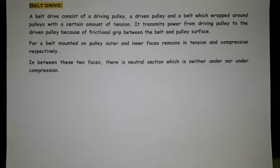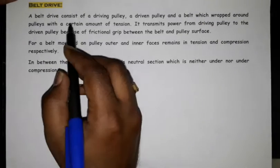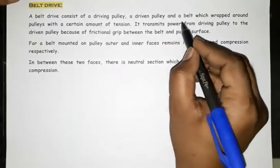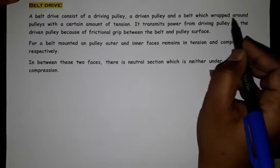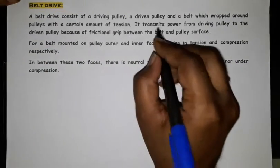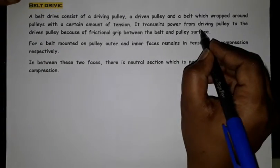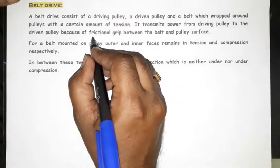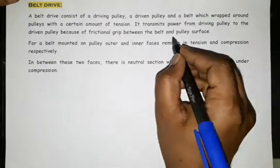So I am going to explain the belt drive. What do you mean by belt drive? The belt drive consists of the driving pulley and the driven pulley and a belt which wraps around the pulleys with a certain amount of tension.